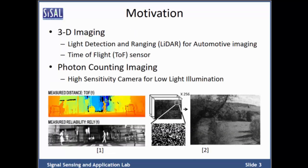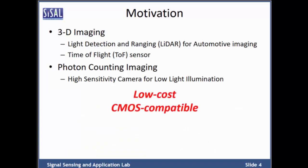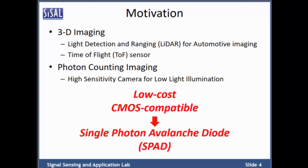Apart from the traditional image sensor for two-dimensional image acquisition, there is increasing demand on spatial applications. The first is LiDAR or time-of-flight for three-dimensional image capturing. Another application is high-sensitivity photon counting imaging for low-light illumination. These two examples are focusing on low-cost and CMOS compatible solutions. Recently, single-photon avalanche diode, which is named SPAD, has become a potential sensing component in this field.